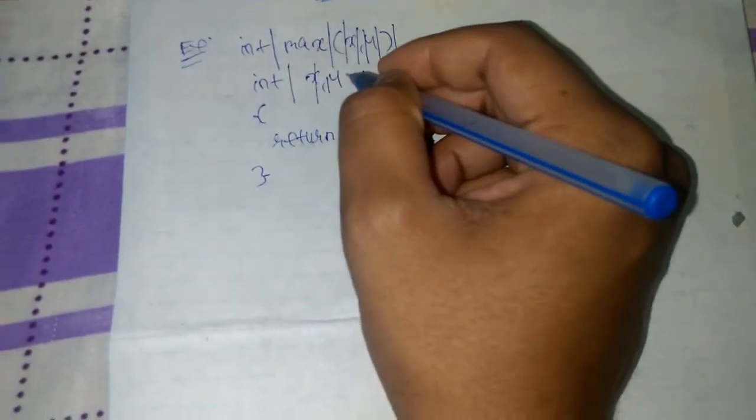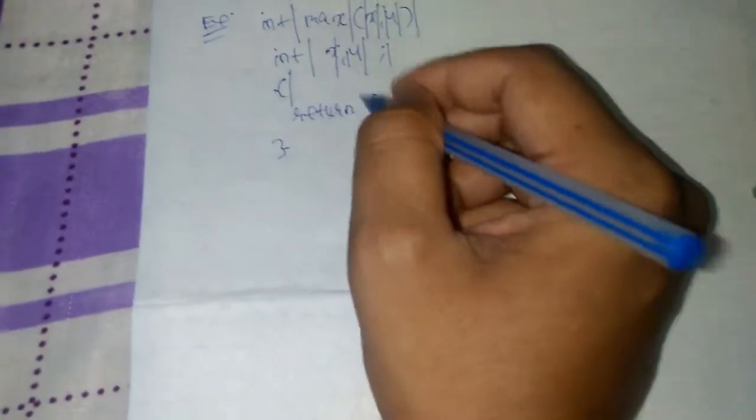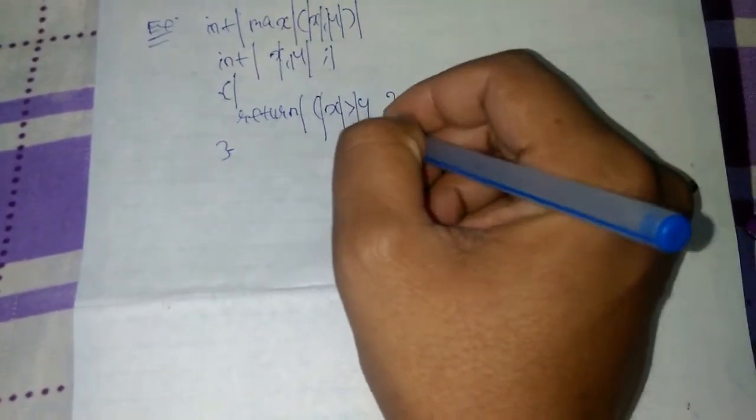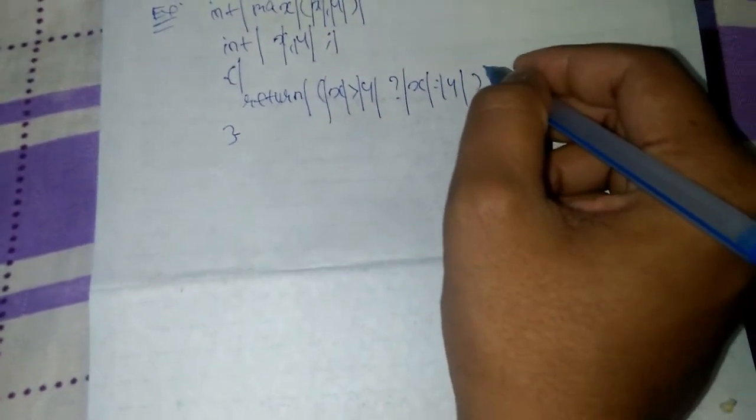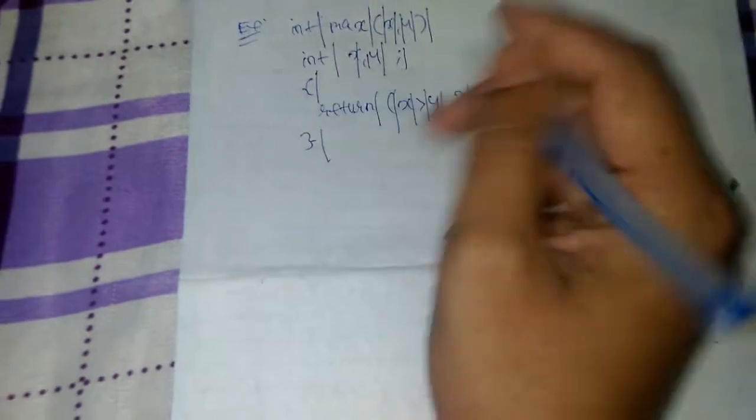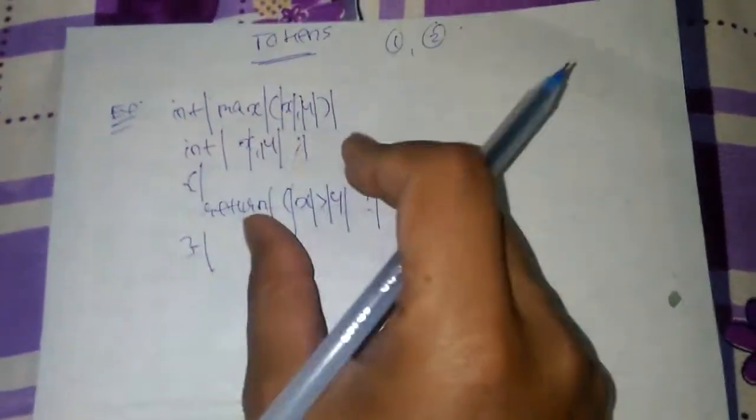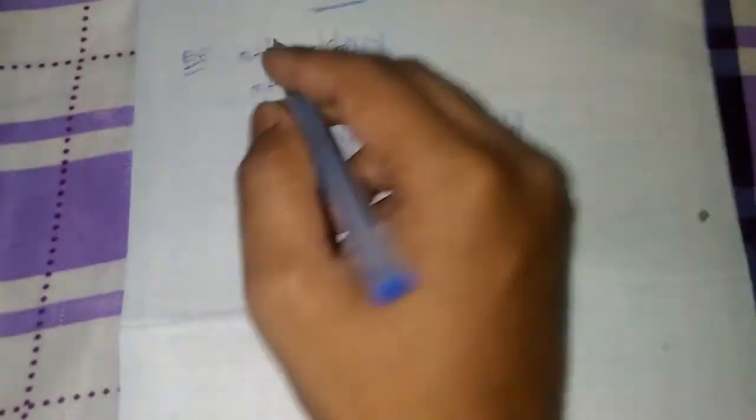It will be separated: x will be separated, y, again y semicolon, then again these braces will be separated, return will be separated, then opening braces, x, greater than sign, y, question mark, x, colon, y, and also these. Each and every symbol and each and every special character or function or name of the word will be separated in order to find the number of tokens.